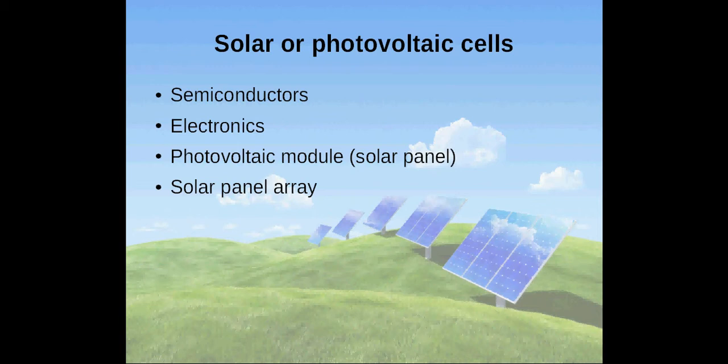There are solar or photovoltaic cells. The assembly of semiconductors and electronics or solar cells is enclosed in a photovoltaic module, more commonly known as a solar panel. Several solar panels are called solar panel array.